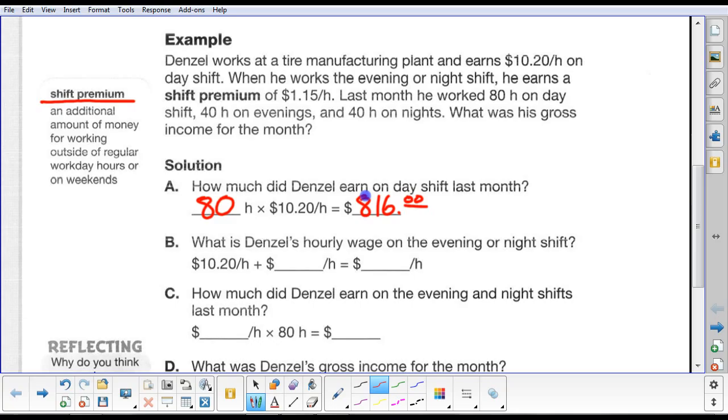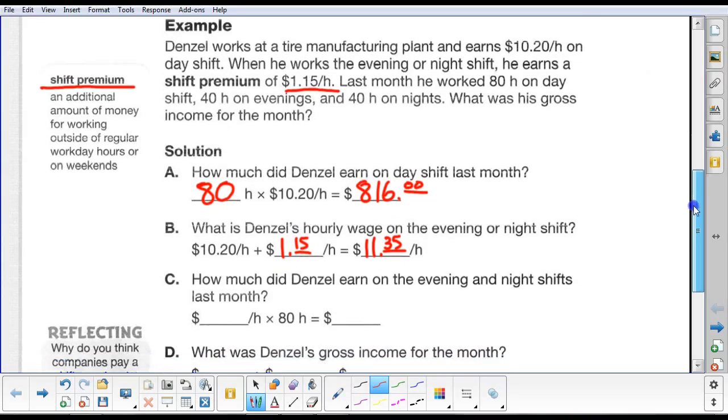What is Denzel's hourly wage on the evening or the night shift? Well, we know that he gets an additional $1.15 per hour when he works outside of the regular day shift. So we take his regular day shift of $10.20 per hour, we add $1.15 per hour to that, and that works out to $11.35 per hour that he's going to make on evening shift or on night shift. It's that little bit of extra on the shift premium.